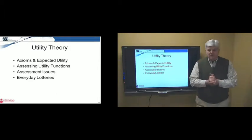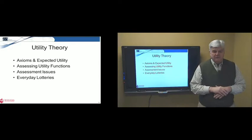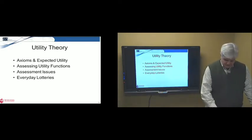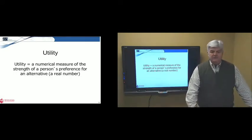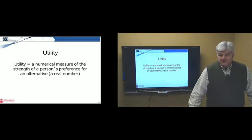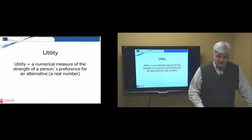So, now, let's try a more formal approach to developing our functions for how we feel about attributes and the uncertainty in those attributes. Utility is a numerical measure of the strength of a person's preference for an alternative. It's a real number. Usually between 0 and 1. It could be between 0 and 100. That's really arbitrary. But it's usually a number between 0 and 1. It says, how strongly do you feel about your preferences for an alternative?